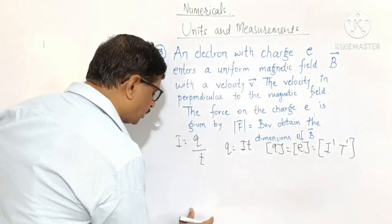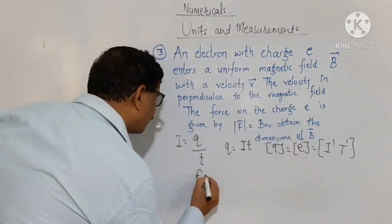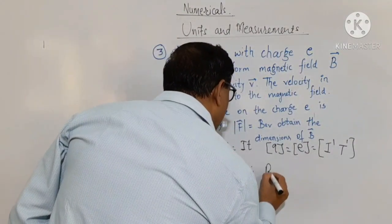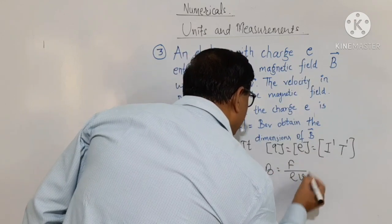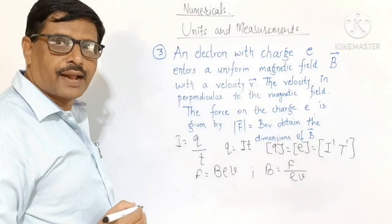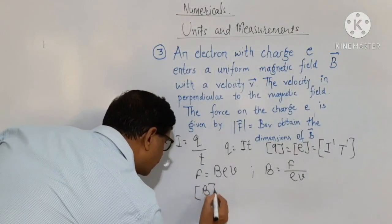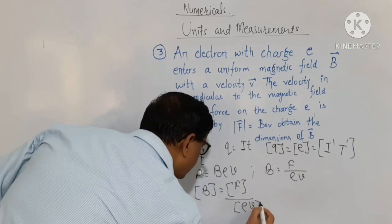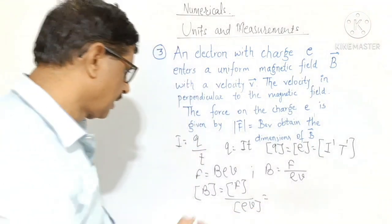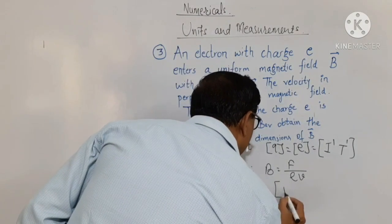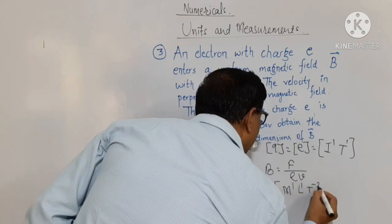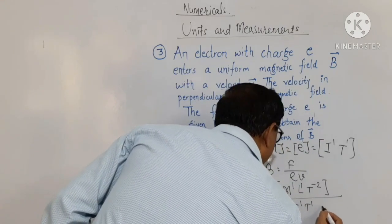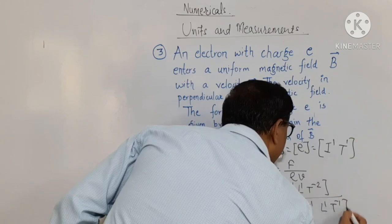The formula we have is F equals B into E into V. Therefore B equals F divided by E into V. Hence, the dimensions of B equals dimensions of F divided by dimensions of E into dimensions of V. We know the dimensions of force are M1, L1, T minus 2. The dimensions of charge are I1 and T1. And the dimensions of velocity are L1 and T minus 1, since velocity is rate of change of displacement with unit meter per second.